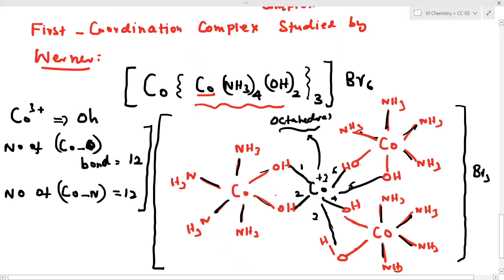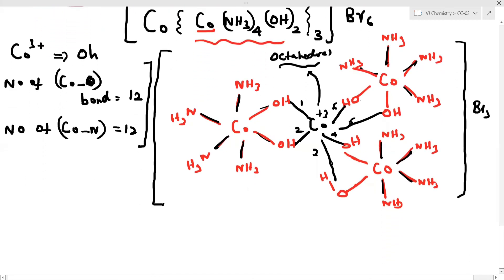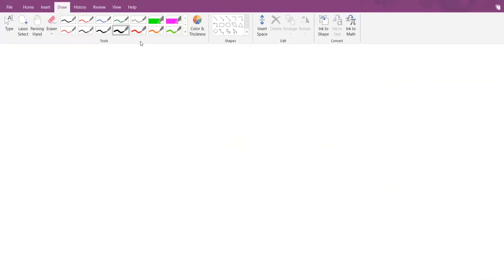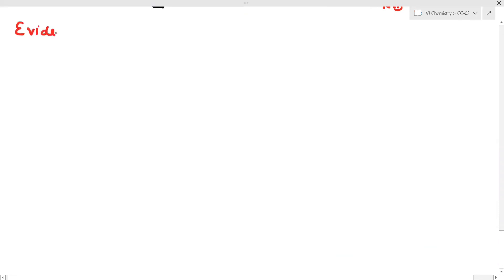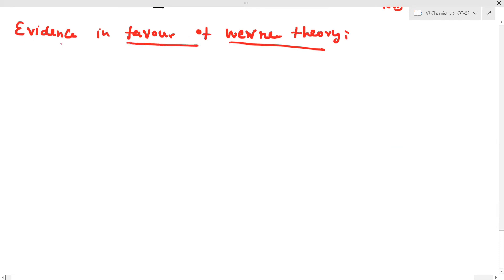Now we discuss the evidence in favor of Werner's theory, including precipitation and conductivity applications. First evidence: the precipitation effect. I will give you three complexes to illustrate this.